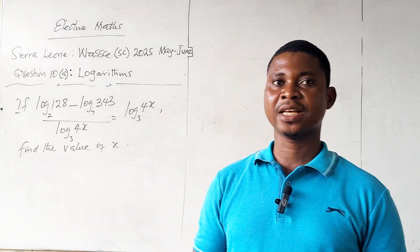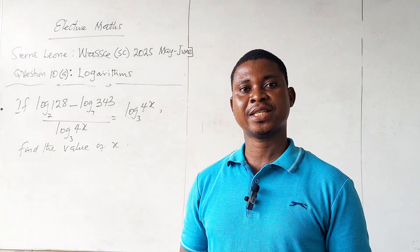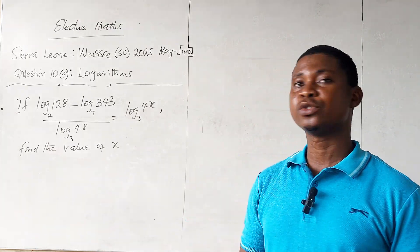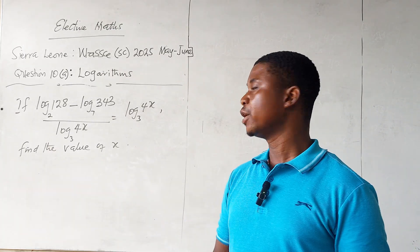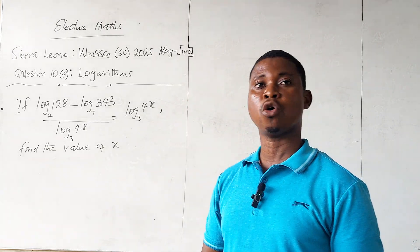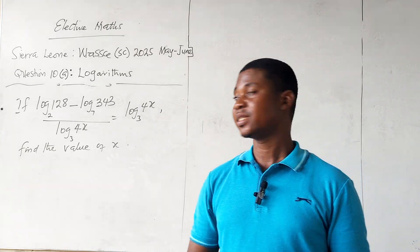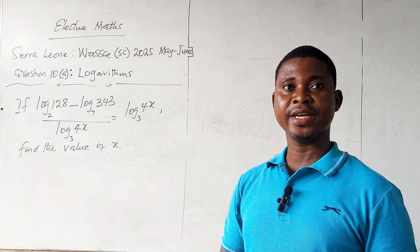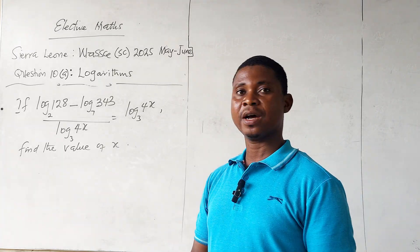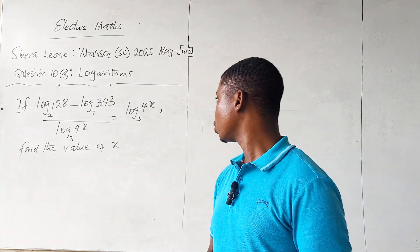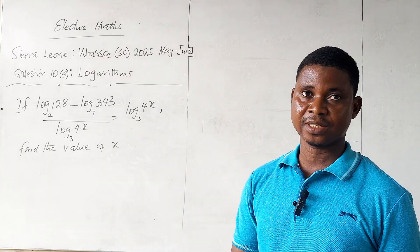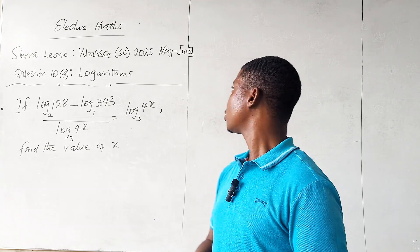Hi, welcome back to today's lesson. Today we are going to look at elective maths questions from Sierra Leone WASSI 2025, May/June, question number 10a. The question is on logarithms. It reads: if log 128 base 2 minus log 343 base 7, all over log 4x base 3, is equal to log 4x base 3, find the value of x.